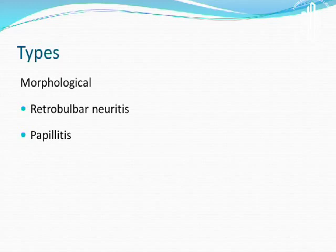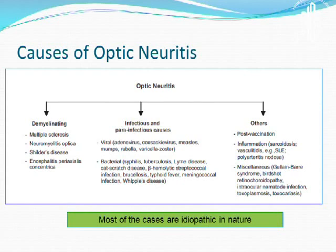Optic neuritis is typically seen between the age of 45 and morphologically can be described as a retrobulbar neuritis or papillitis depending on the appearance of the nerve. The causes of optic neuritis are numerous, of which demyelinating causes are the most important variety we normally deal with. Other causes include infectious and para-infectious etiologies, as well as various atypical varieties. Most of the time, cases appear to be of an idiopathic nature.